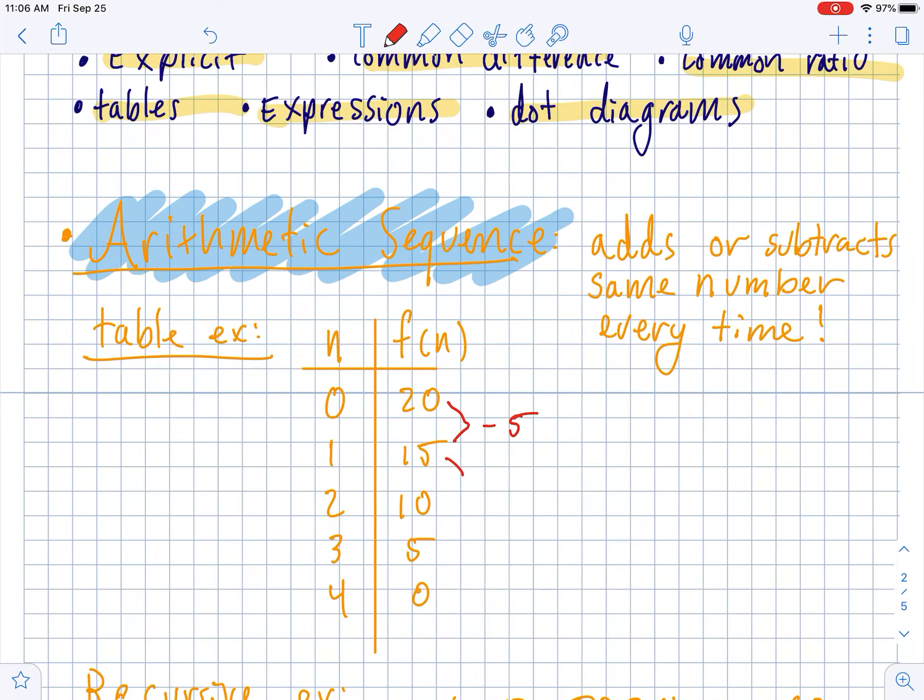If you look at what's happening to the numbers, 20, 15, 10, 5, 0, to get from here to here, it's a subtract 5. And to get from here to here, it's also a subtract 5. And this keeps happening every single time. This right here is the common difference. This is what makes this sequence arithmetic. So the common difference in this sequence is negative 5.